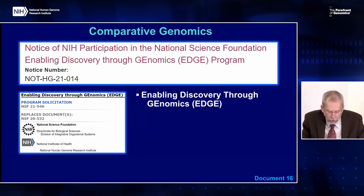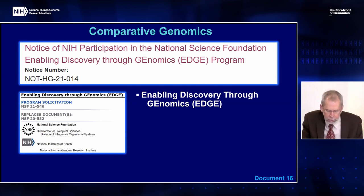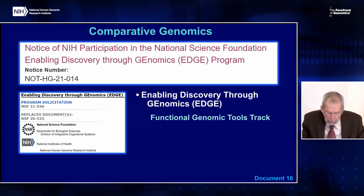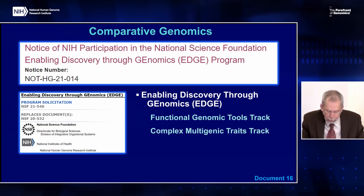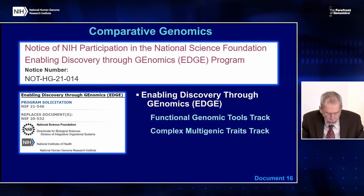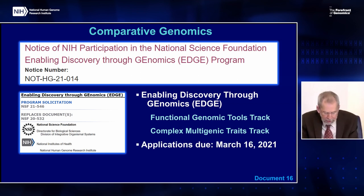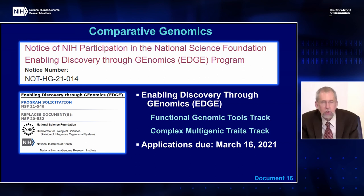As part of the comparative genomics program, NHGRI has signed on to the National Science Foundation-led Enabling Discovery Through Genomics, or EDGE program, a multi-agency initiative supporting research to advance the understanding of comparative and functional genomics. EDGE has two tracks: the Functional Genomic Tools track supports development of innovative tools, technologies, resources, and infrastructure; and the Complex Multigenetic Traits track supports functional genomic research addressing the mechanistic basis of complex traits in diverse organisms within environmental, developmental, social, and genomic contexts. Applications are due on March 16th, and those interested should reach out to program staff listed on the NSF solicitation page.